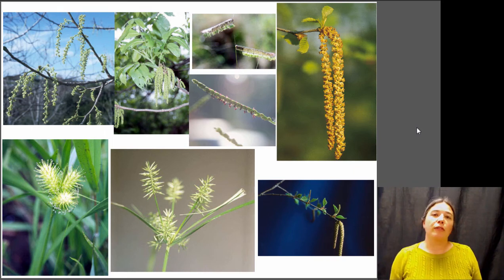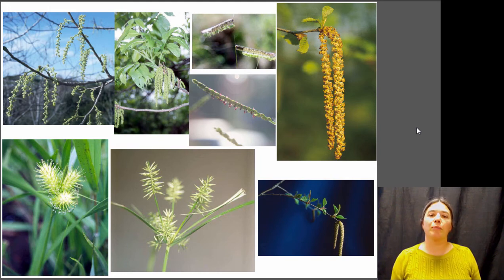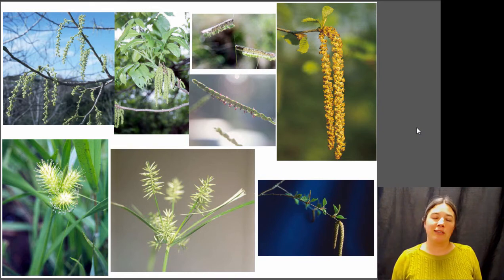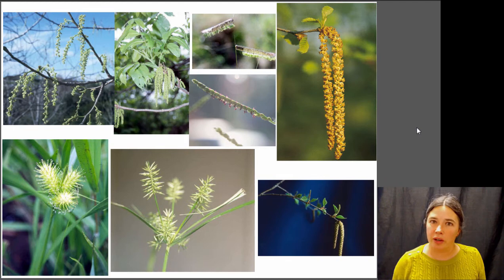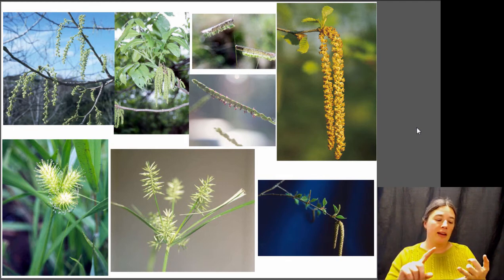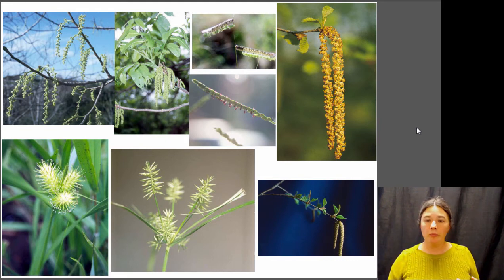Wind-pollinated flowers tend to look fairly similar — they're very simple. They're not brightly colored and they're not producing nectar. They just produce lots and lots of pollen, and when the wind comes by it shakes these little flowers, the pollen releases, floats up into the air, and drifts around until it lands on a female flower of the right type. These are the types of flowers that people tend to be allergic to, because they produce a lot of pollen that gets breathed in, causing snotty noses and itchy eyes. Things like grasses and trees tend to be wind-pollinated.